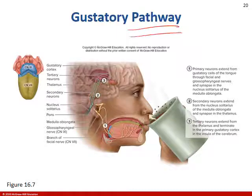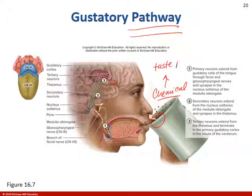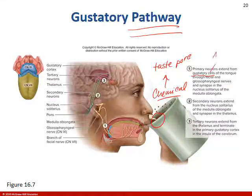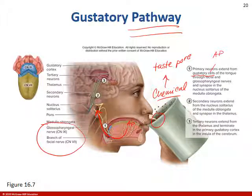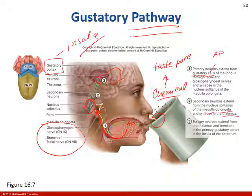Following the full gustatory pathway: chemicals — say someone is drinking coffee — have to make it to the taste pore, then come in contact with the gustatory cells of the tongue, generating an action potential. That information synapses with two cranial nerves: the glossopharyngeal and facial nerve. Those synapse in the brainstem, specifically at the medulla oblongata, then eventually the thalamus, and finally we get to the gustatory cortex in the insula lobe. That's how you perceive what it is that you're tasting.